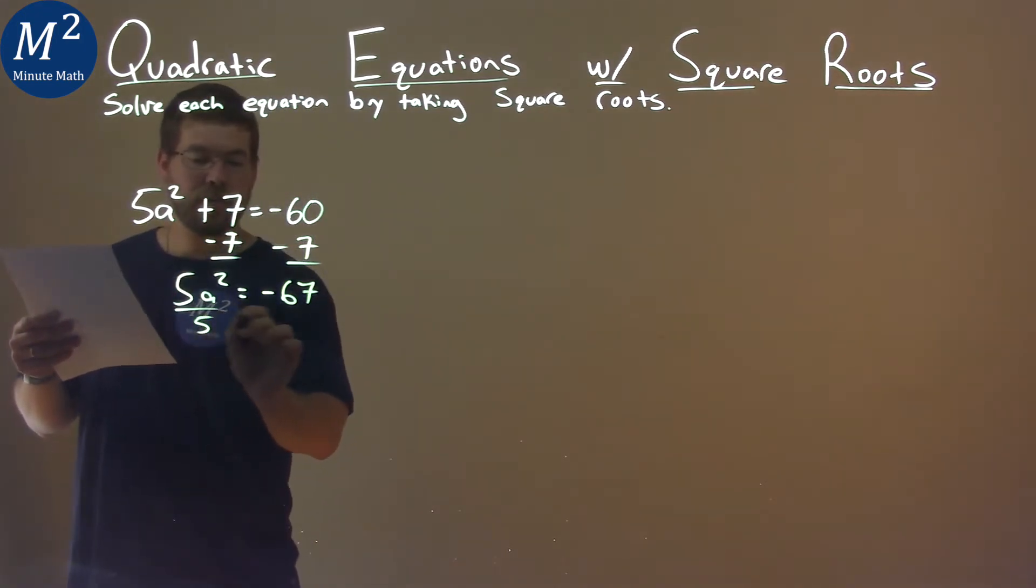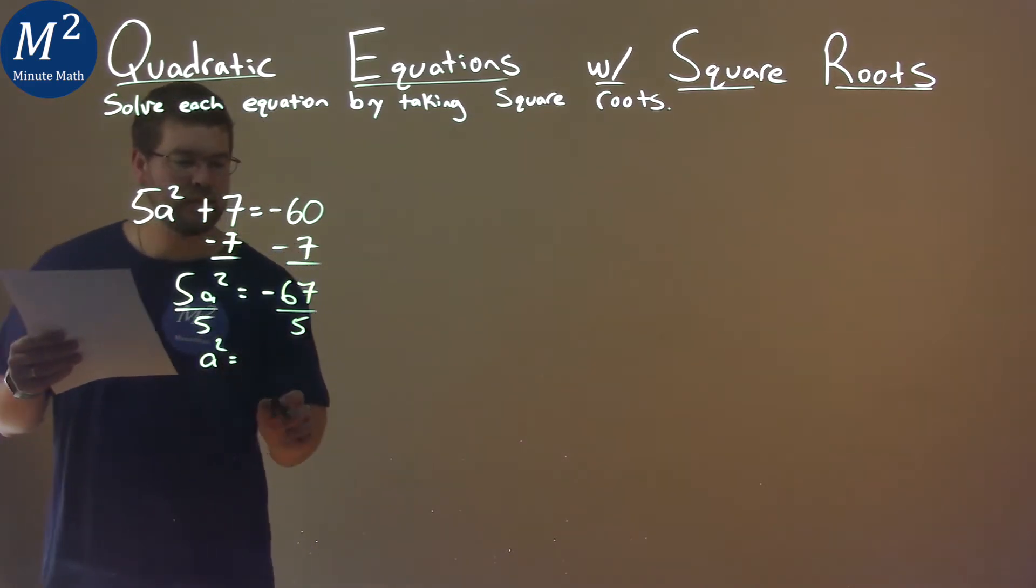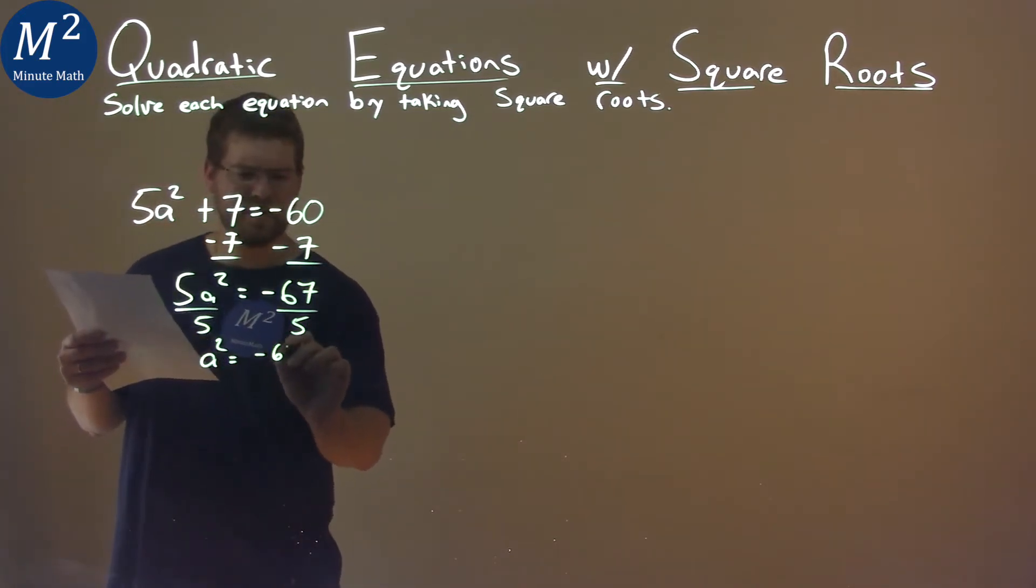I then have to divide both sides by 5, and now a squared is by itself, and well, this is just negative 67 over 5.